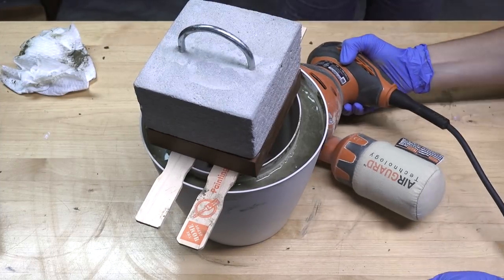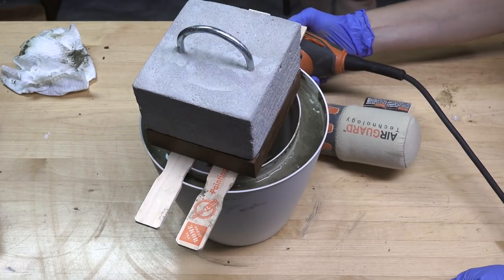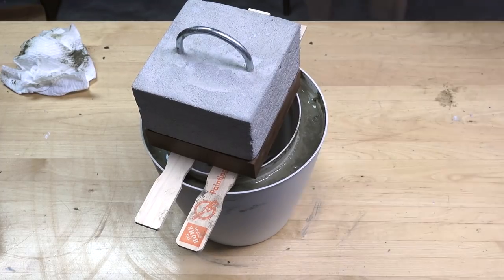I continued filling up the mold and then I used a random orbital sander without the sandpaper to vibrate the mold to release any air bubbles. The more vibrating the smoother finish you will get in your finished concrete.